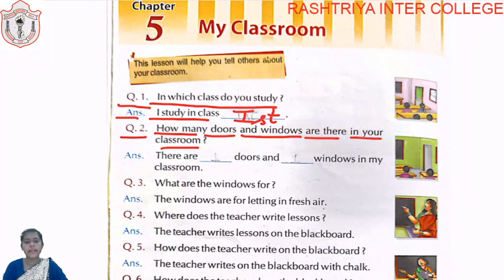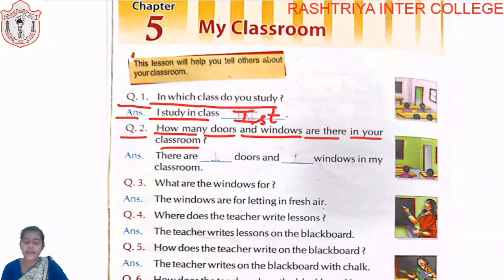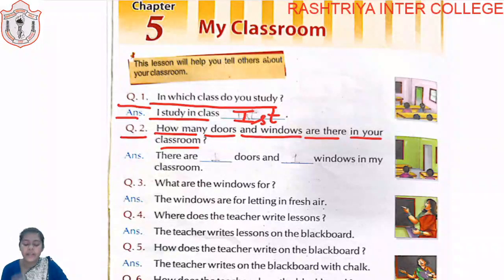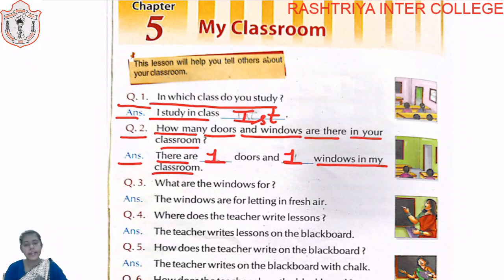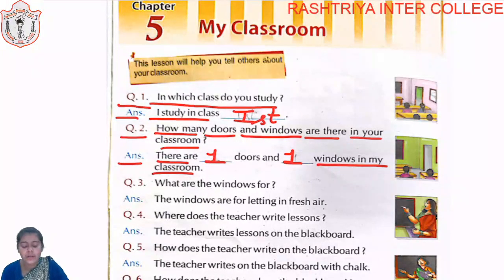Second question is: How many doors and windows are there in your classroom? The answer is: There is one door and one window in my classroom.